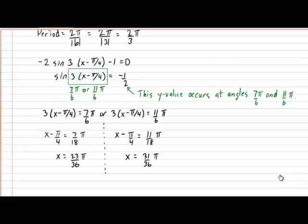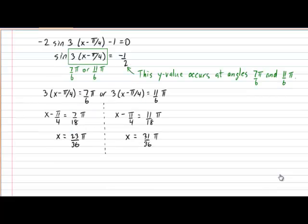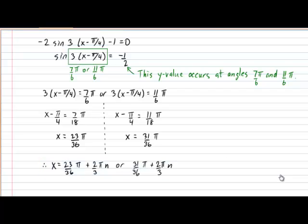In our final conclusion, we must state that these two zeros will repeat themselves upon every new cycle. This allows us to finally conclude that the zeros occur at 23 over 36 pi plus every 2 thirds pi radians, or they will occur at 31 over 36 pi plus every 2 thirds pi radians. The variable n can be substituted for whichever cycle you're interested in. And that's all there is, ladies and gentlemen, to solving zeros for a sine function for angles that are easily detectable on the trig circle.